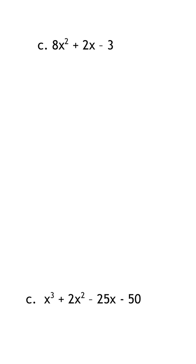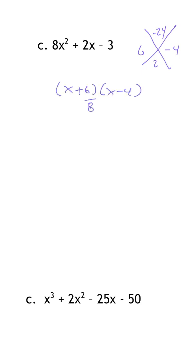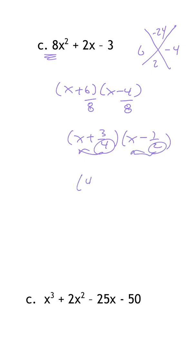For the next one: no GCF, so 8 × (−3) = −24, middle term is 2. Factors of −24 that add to 2 are 6 and −4. Divide by 8: 6/8 reduces to 3/4, and 4/8 reduces to 1/2. Kick denominators up: (4x + 3)(2x − 1) and it's factored.